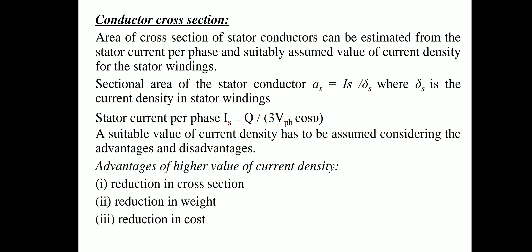The cross-sectional area of stator conductors can be estimated from the stator current per phase and a suitably assumed value of current density for the stator windings. Sectional area of the stator conductor: As = Is / δs, where δs is the current density in stator windings.